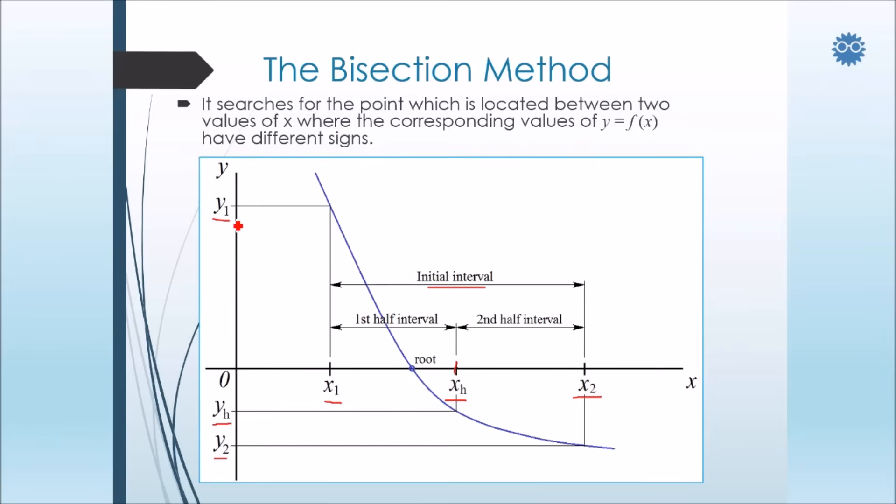So if the signs of yh and y1 are opposite, that means the root is located in the first half interval, else it will be in the second half. Now, in this case, we see that it is in the first half, so we repeat.